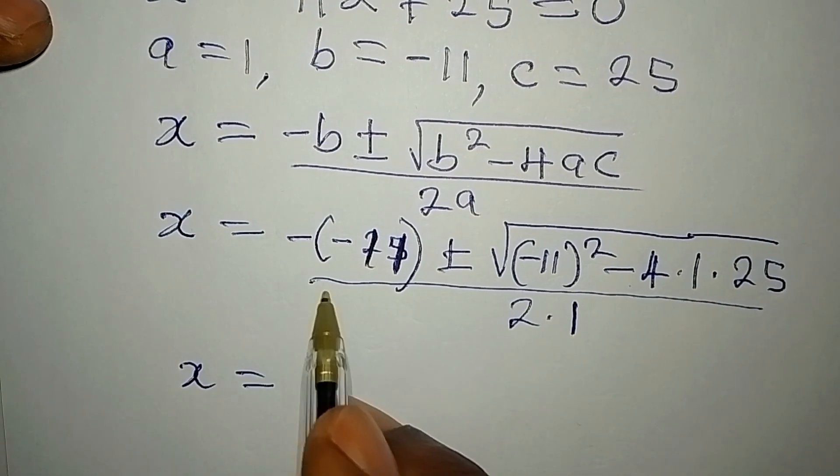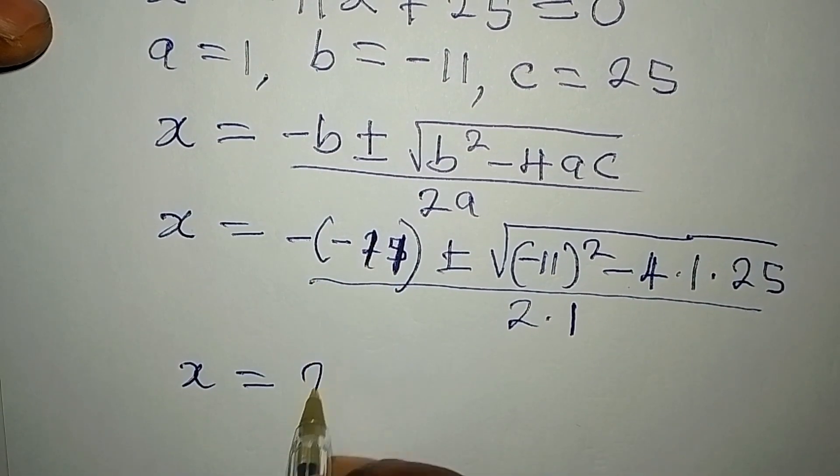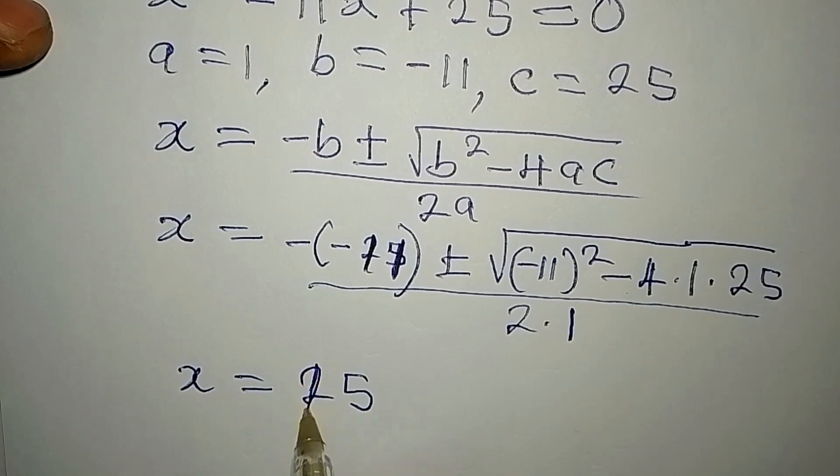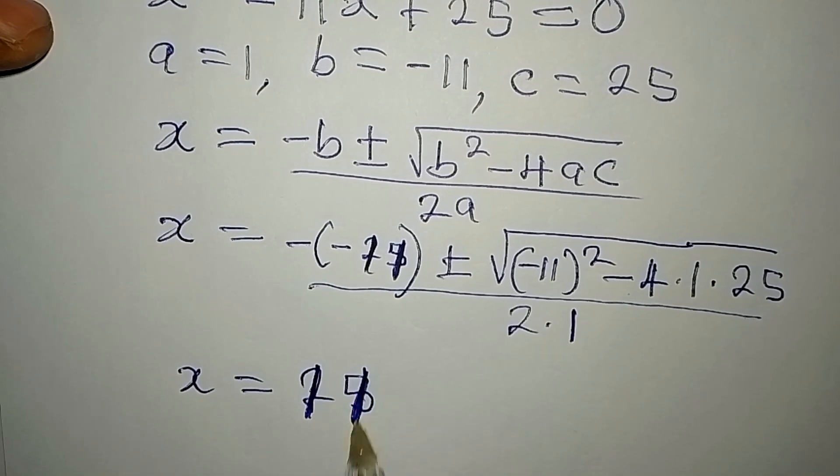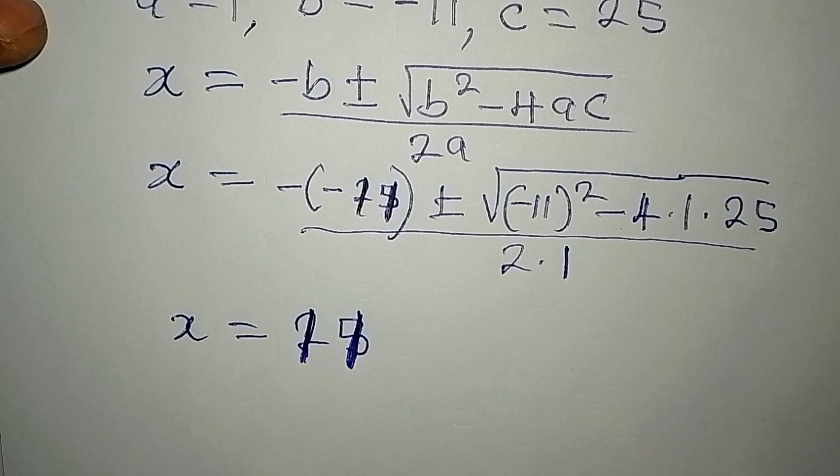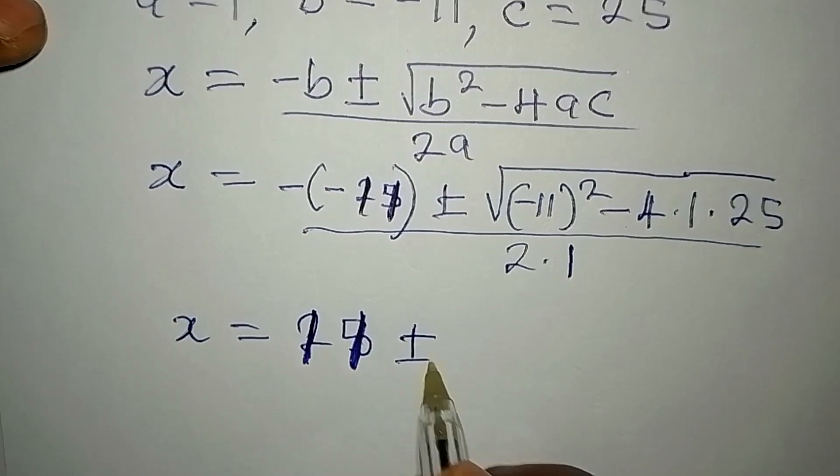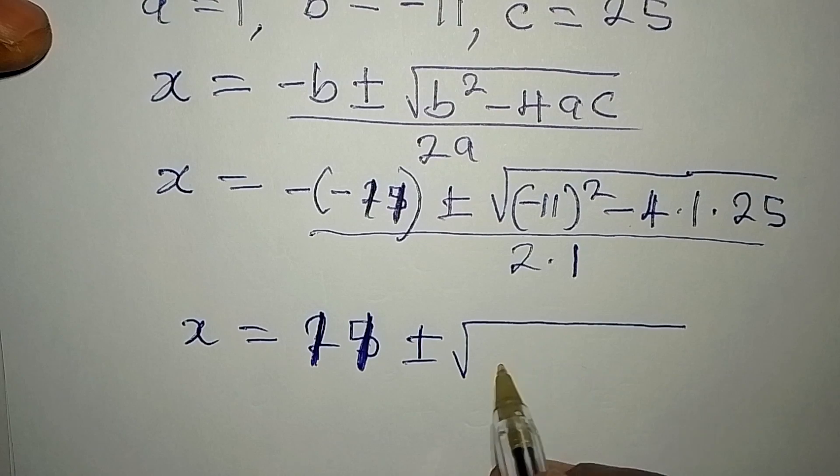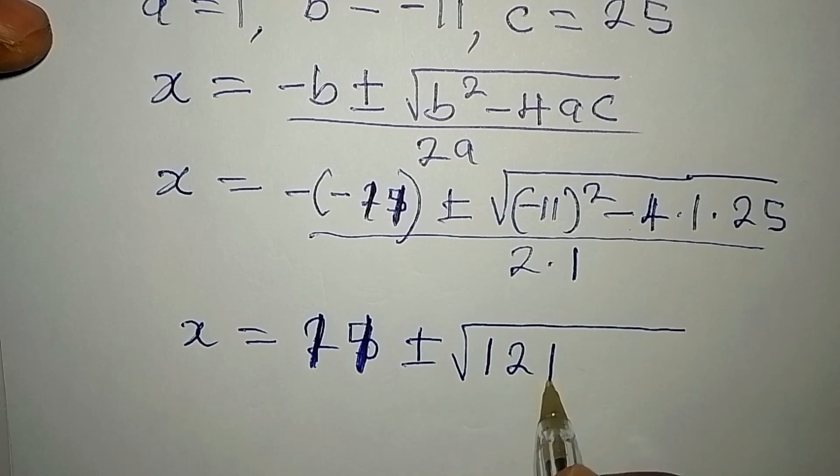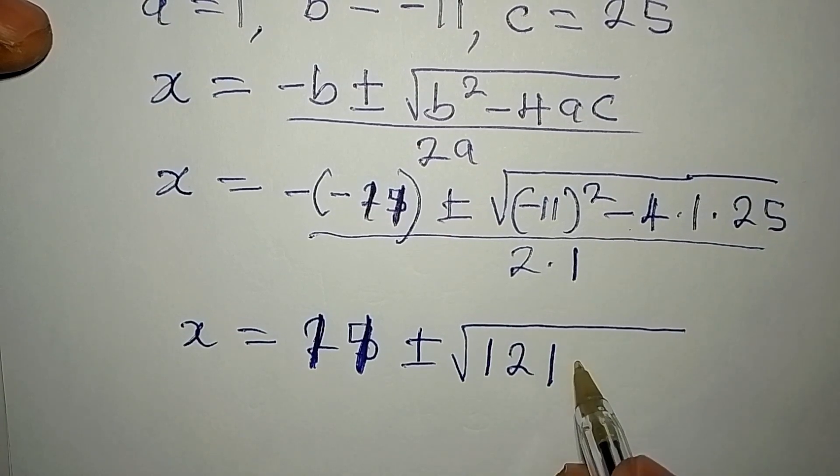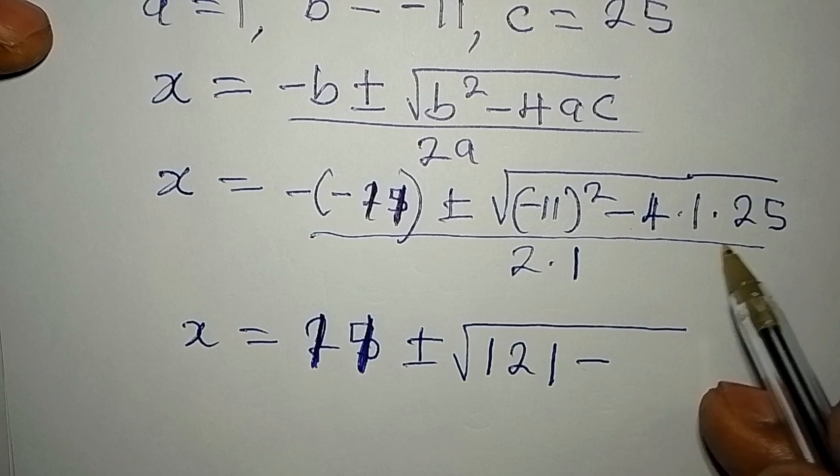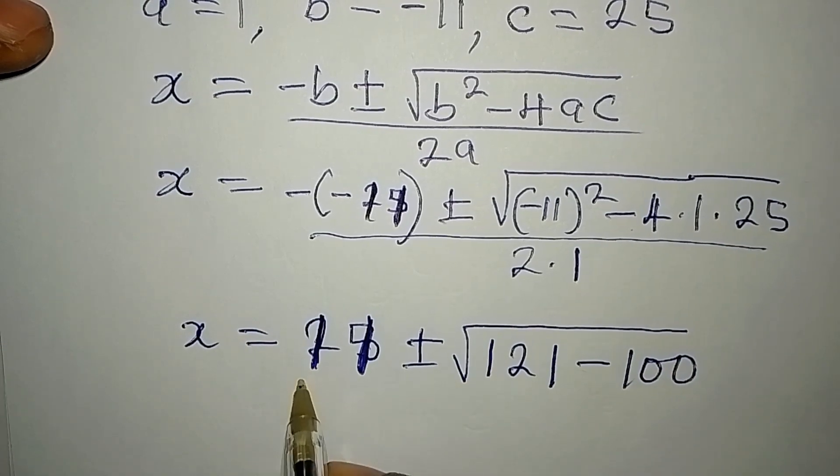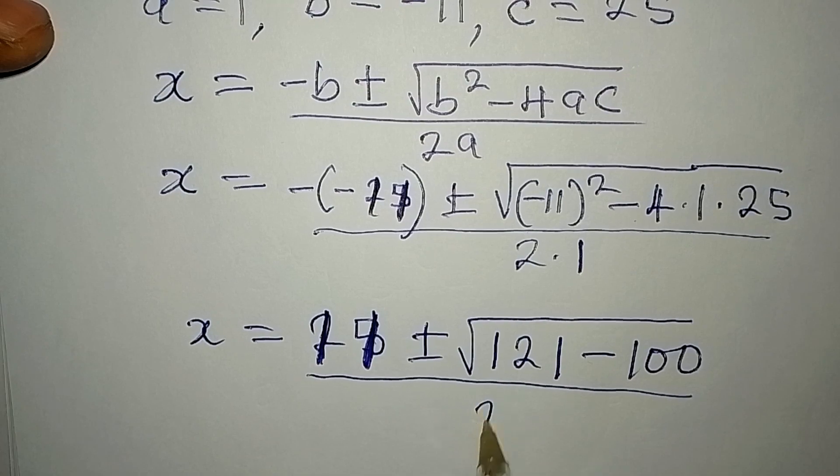x will be equal to negative negative 11 is positive 11, then plus or minus, negative 11 squared will give 121, then minus 4 times 1 times 25 will give us 100, so the whole of this will be over 2.